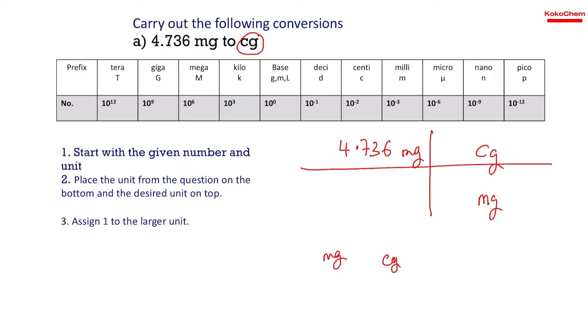The desired unit is centigrams. Centi has a value of 10 to the power negative 2, which is 1 over 100. Milli has a value of 10 to the power negative 3, which is 1 over 1000.